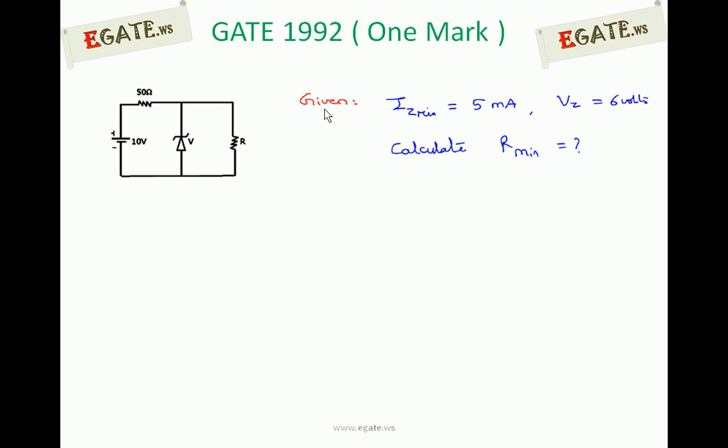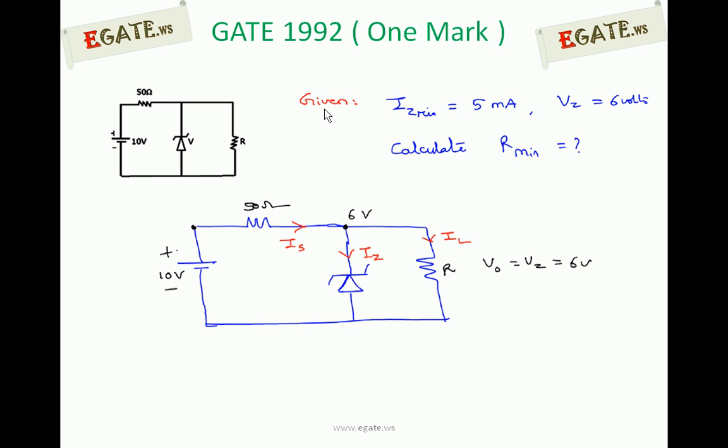We can redraw the diagram with the current directions as shown. This Is is the current flowing through 50Ω, and this Is divides into two branches: Iz is the Zener current, and Il is the load current.